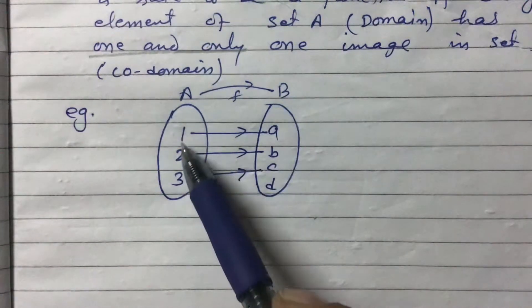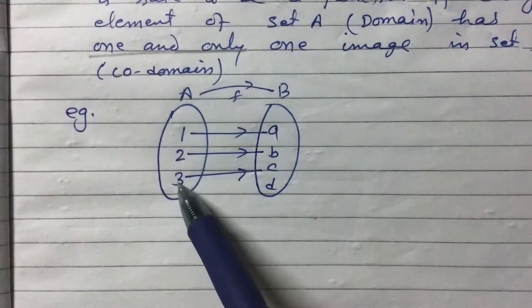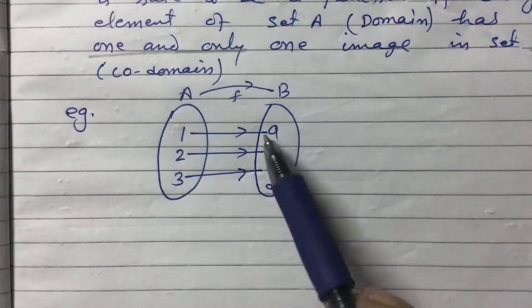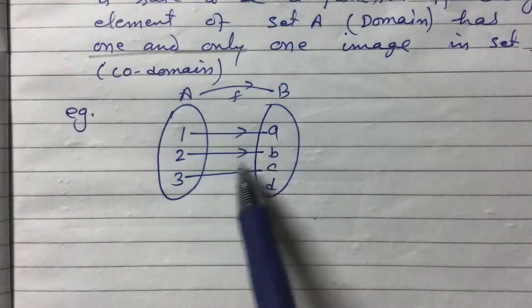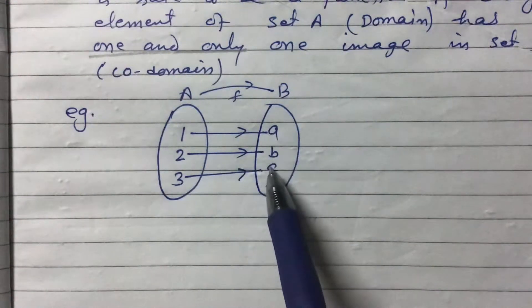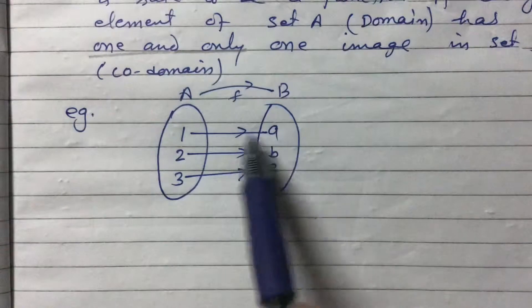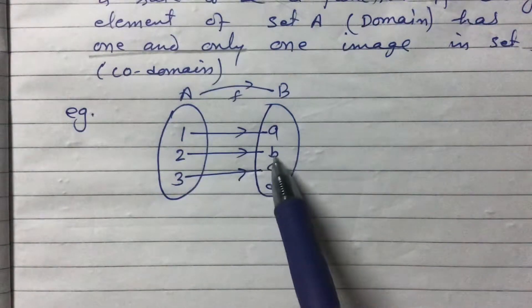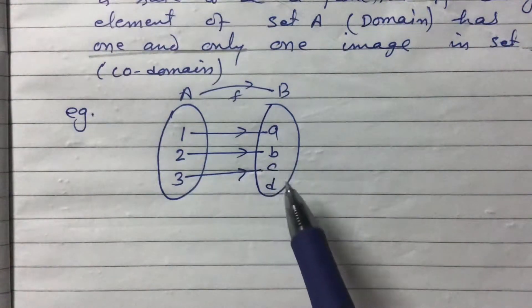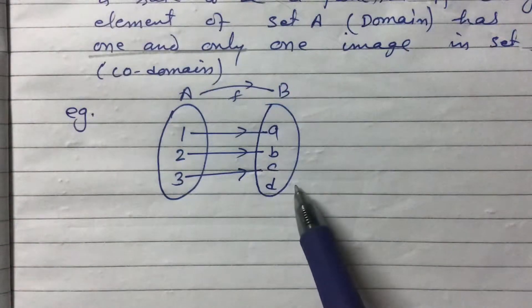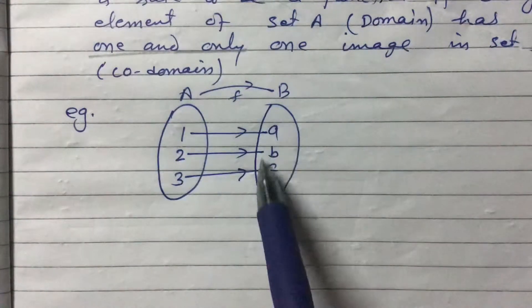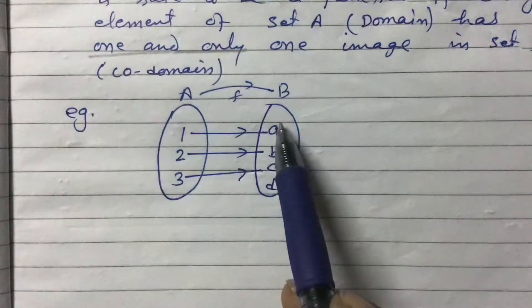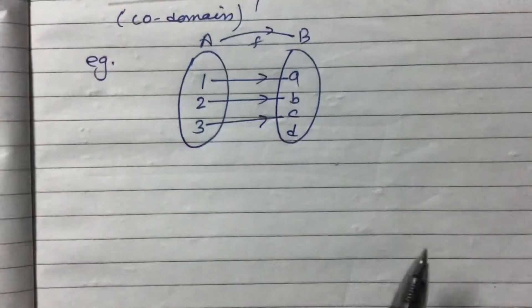Each element of the domain is called a pre-image. The elements in the codomain that are related to the domain — a, b, and c — are called images, but d is not an image. The set of all images is called the range.